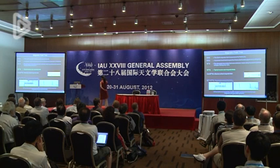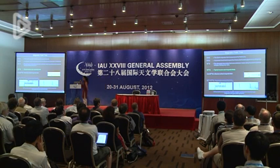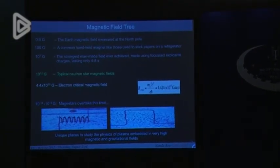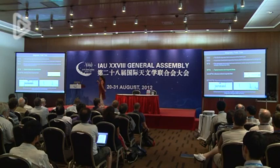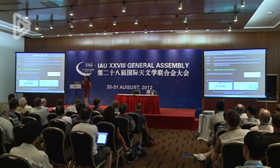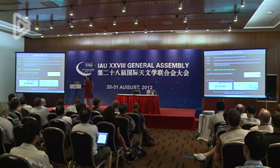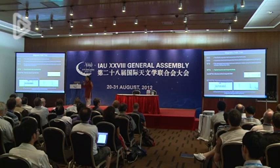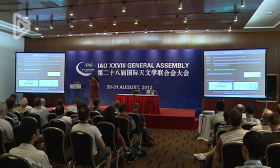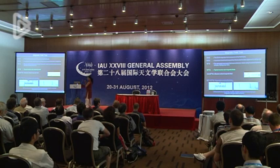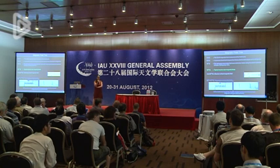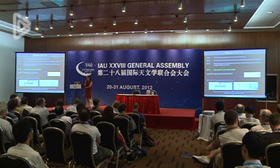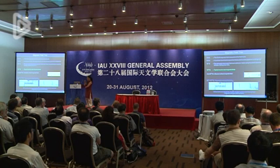If we take the strongest man-made magnetic field achievable on Earth, we are speaking about something of the order of 10 to the 7 Gauss. A typical neutron star has magnetic fields between 10 to the 9 and 10 to the 12 Gauss. With magnetars, I would speak about sources with magnetic fields around 10 to the 14 to 10 to the 15 Gauss — two or three orders of magnitude higher than a typical pulsar. These are unique laboratories where we can test our knowledge of how matter and plasma behave under very high magnetic and gravitational fields.